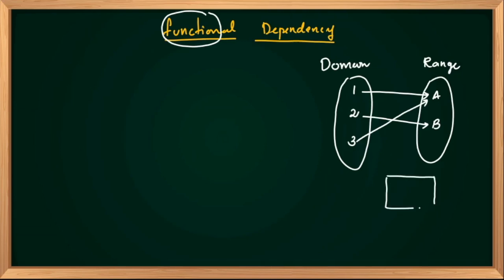This is our function. This domain is a set — there are no duplicate elements. This is set X, this is set Y. So for any input we will have a function output.